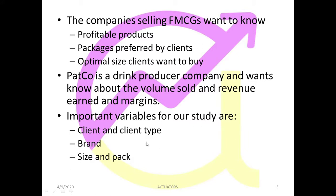The important variables for our study are: client and client type. A company like Patco doesn't deal with just one client — they deal with many clients, and the type of client is also different. Maybe they are selling in a supermarket, maybe through a direct retailer — these are the different client types. Brand — different brands' products will be sold, and we want to know which brands are the most profitable and which are at a loss. Size and pack — what are the sizes in which the product is being sold.